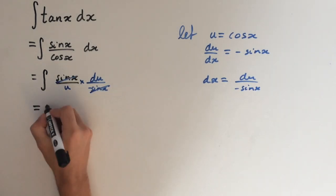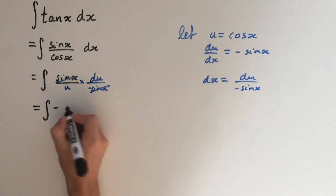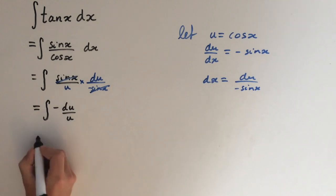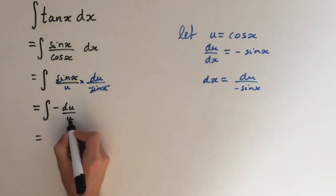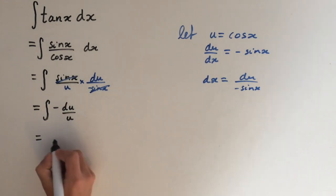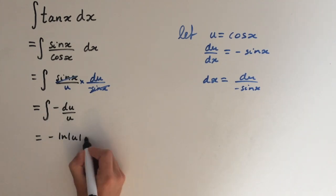So this is going to give us integral of minus du over u. And integral of 1 over u is just ln(u). So we're going to get minus ln(u) plus c.